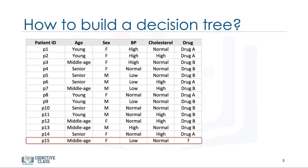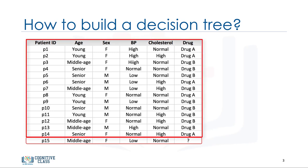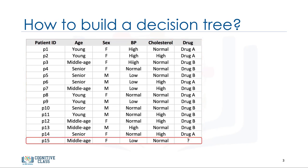Imagine that you're a medical researcher compiling data for a study. You've already collected data about a set of patients, all of whom suffered from the same illness. During their course of treatment, each patient responded to one of two medications.